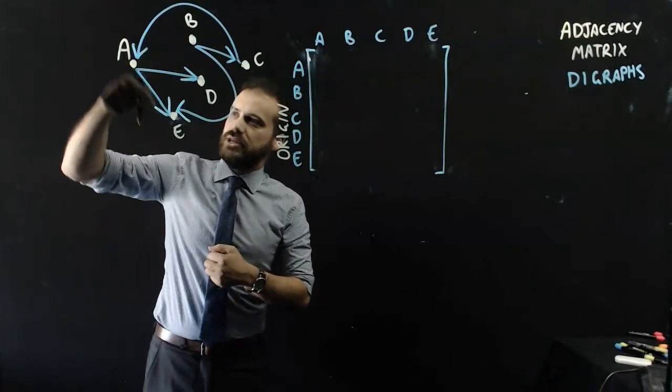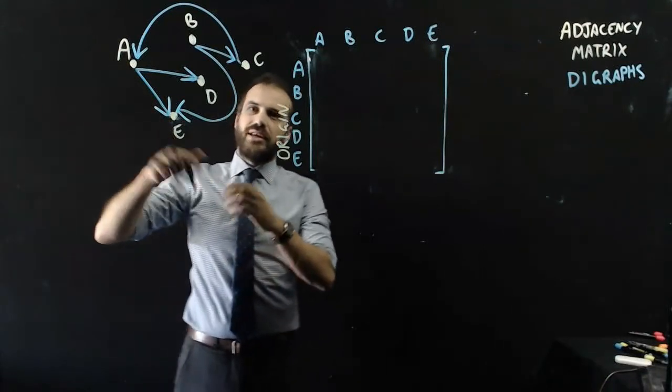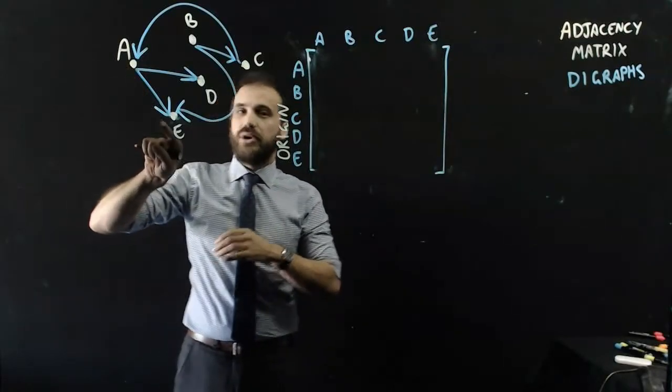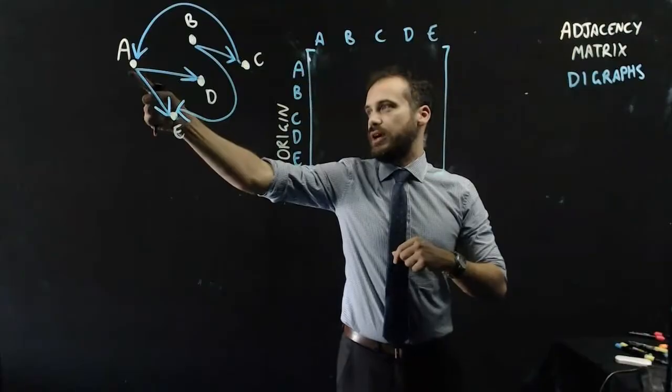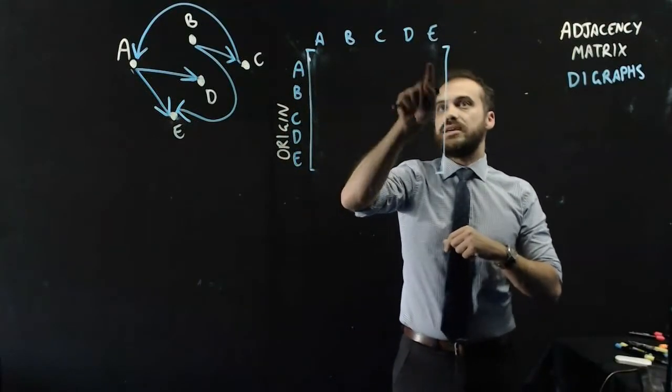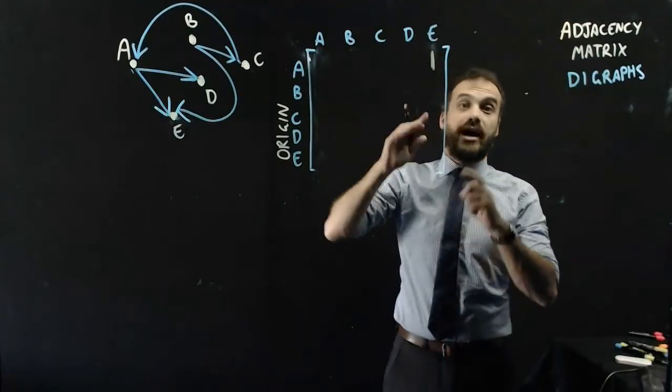that arrow moves to E. In our food chain example, A gets eaten by E. So the origin of the arrow was A, and then we're going to E. So A to E, yes, that happens.